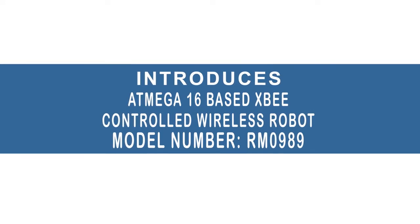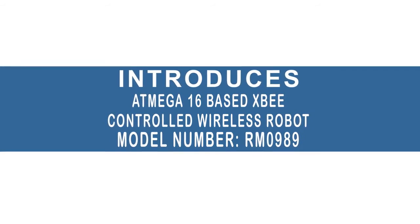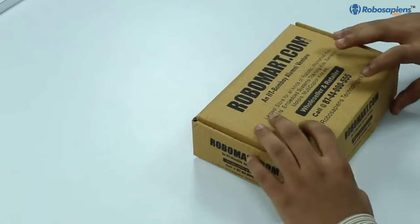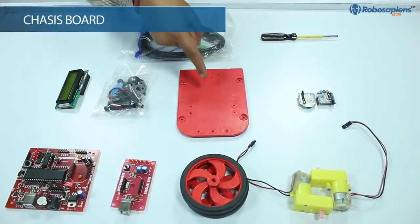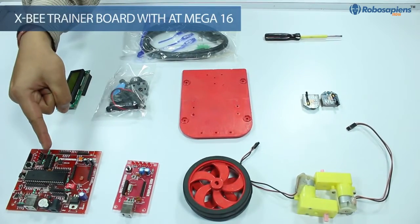Robomart introduces Atmega 16 based Zigbee controlled wireless robot, model number RM0989. Hey guys, here we have our complete kit box. Let's have a look at our kit components. Here we have a chassis board, nut-bolt packet, LCD, Zigbee trainer board with Atmega 16.